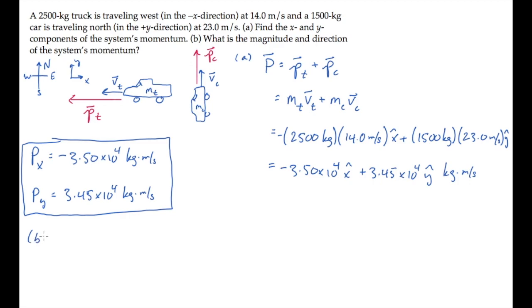Part B asks us to find the magnitude and direction of this momentum. Here are the components, x and y, and the system's momentum is shown in red.